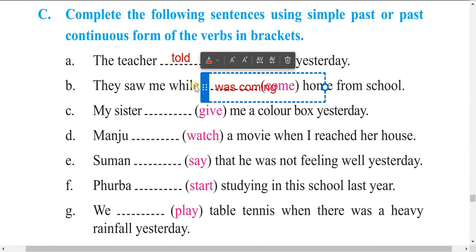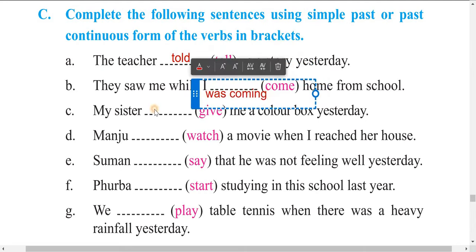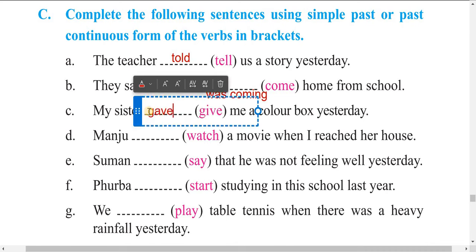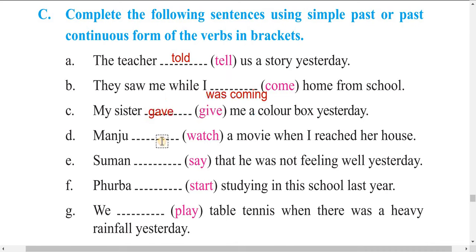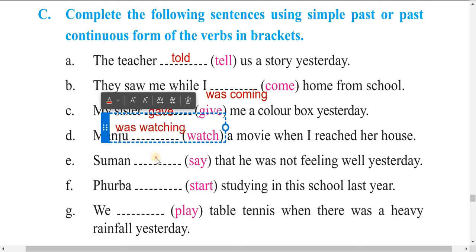Next: 'They saw me while I was coming home from school' — we use past continuous 'was coming.' And: 'My sister gave me a color box yesterday' — 'gave' because of 'yesterday.' Then: 'Manju was watching' — something was happening when something else occurred, so past continuous is used.